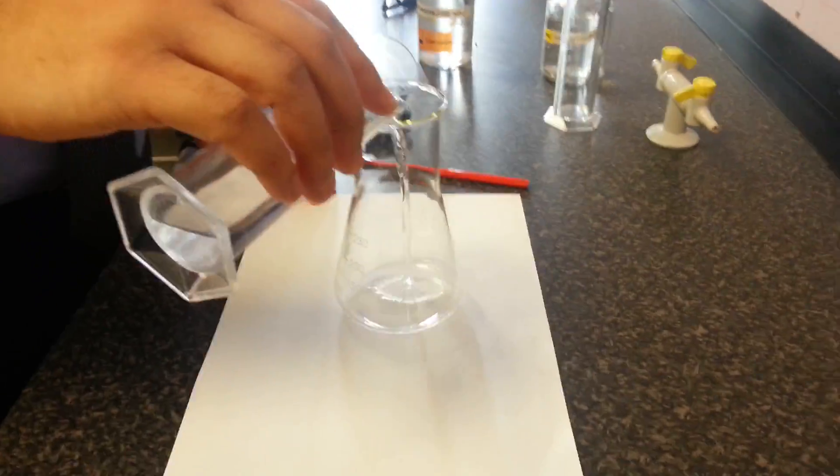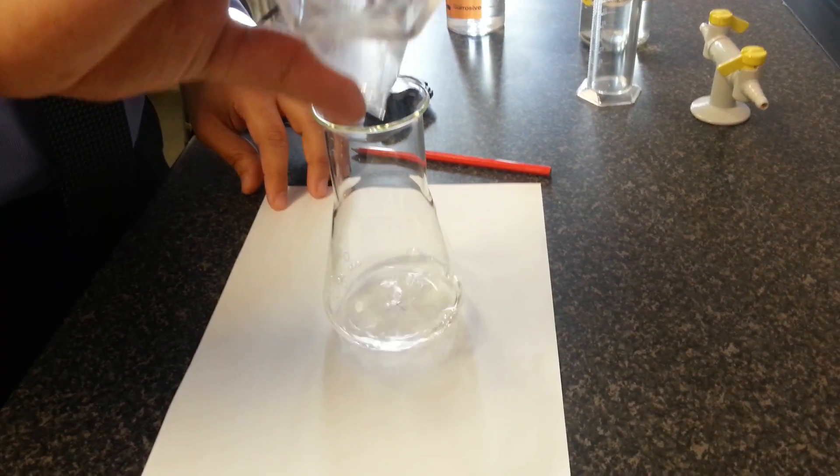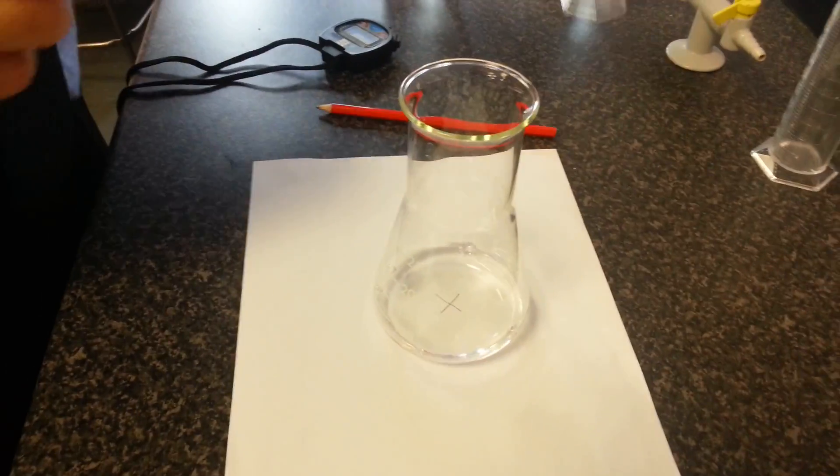Put the cap back onto the bottle, put the bottle to the side. Pour out the sodium thiosulfate into the conical flask and then put the measuring cylinder to the side.